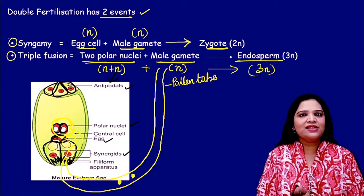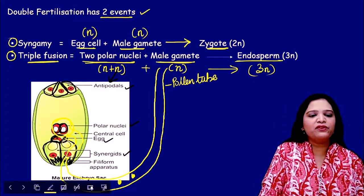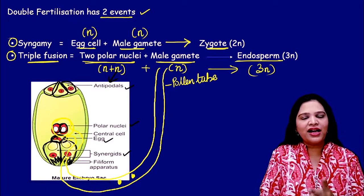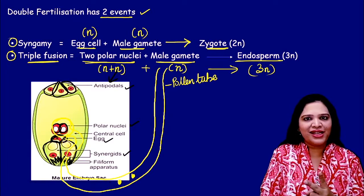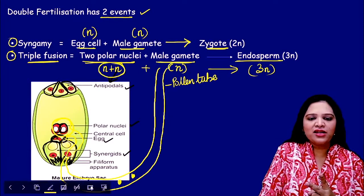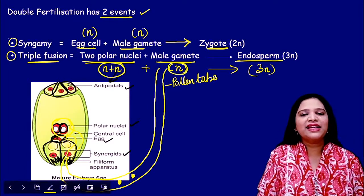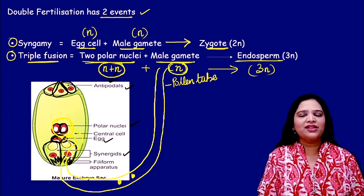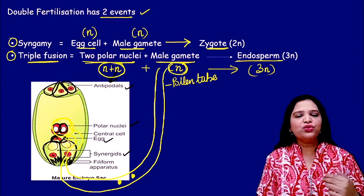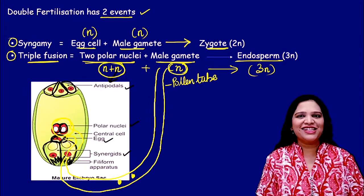This is called triple fusion. Two polar nuclei plus one male gamete — three nuclei are involved and fusing together, which is why we call it triple fusion, resulting in 3n. These are the two events which exactly occur in double fertilization.